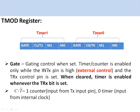When the GATE bit is set to 1, the timer or counter is enabled by the external pin. For Timer 1, the INT1-bar pin should be high and at the same time the TR1 control bit must also be high. When the GATE bit is cleared to 0, the timer or counter is controlled only by the TR1 bit or TR0 bit.